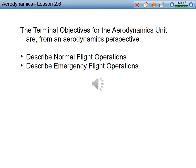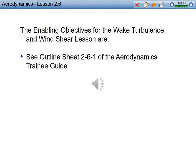Terminal objectives for this aerodynamics unit, chapter six: from an aerodynamics perspective, describe normal flight operations and then describe emergency flight operations. Enabling objectives for wake turbulence and wind shear are outlined in chapter two, TAC six, TAC one of the aerodynamics training guide. Please follow along as we go through these lectures so you can effectively, efficiently, and accurately depict what the enabling objectives are asking. Those enabling objectives are where the test questions for aerodynamics two are found. If you can answer those questions accurately, you can ensure you're going to be successful.